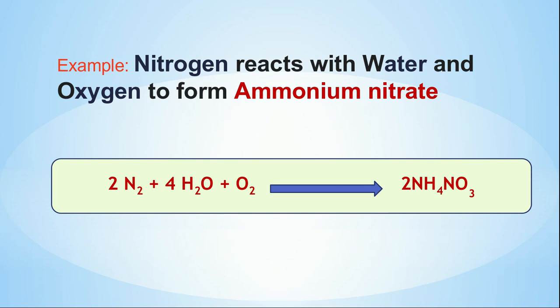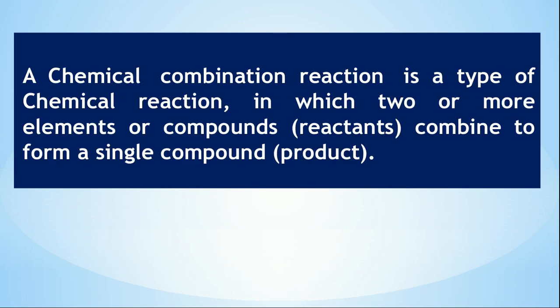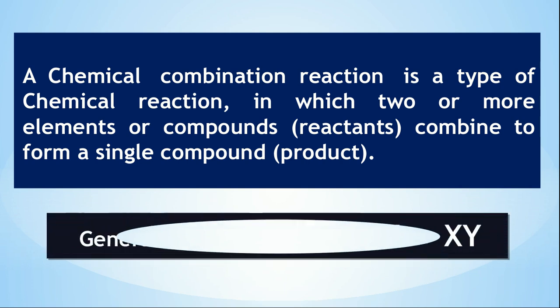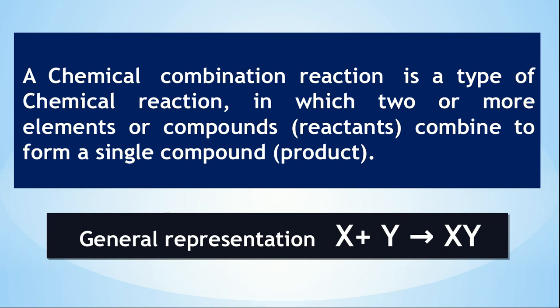By looking at all four examples, kindly give the meaning of chemical combination reaction. Chemical combination reaction is a type of chemical reaction in which two or more elements or compounds (reactants) combine to form a single compound or product. The general representation is: X + Y → XY, where X and Y are the reactants and XY is the single product.